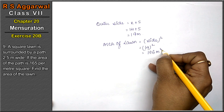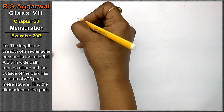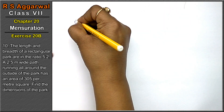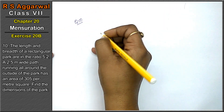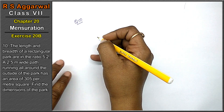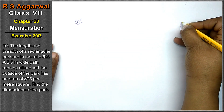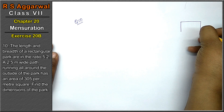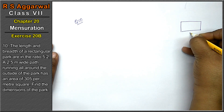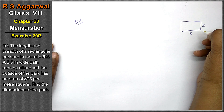14 squared equals 196 square meters. That is the answer. Let's do question number 10 of exercise 20B, that is mensuration. Question number 10: the length and breadth of a rectangular park are in ratio 5 is to 2.